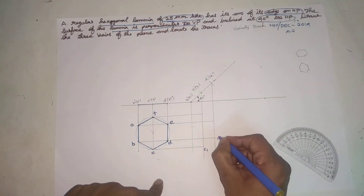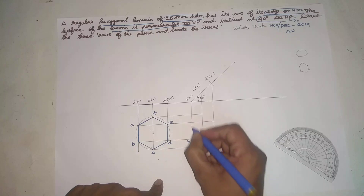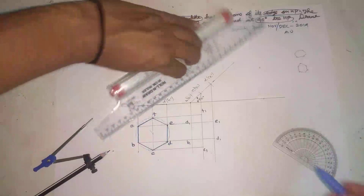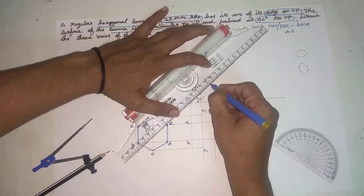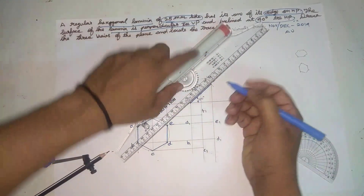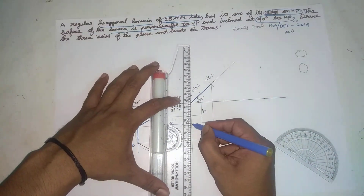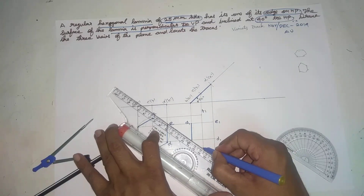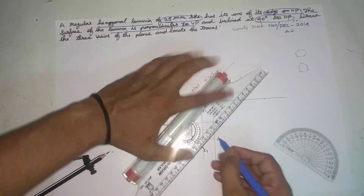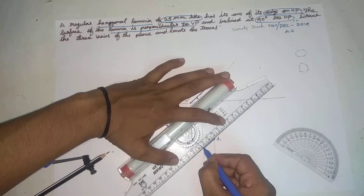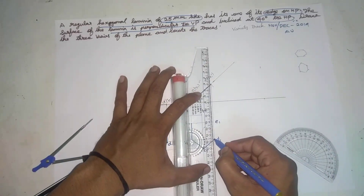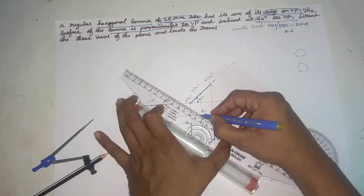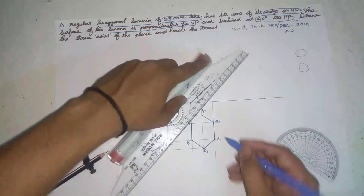c1 in the point, d1 in the point, b1 in the point, a1 in the point, e1, and then the point f1. Now we will darken: this is A-B, B is C, C is D, D is E, E is F, F is A.